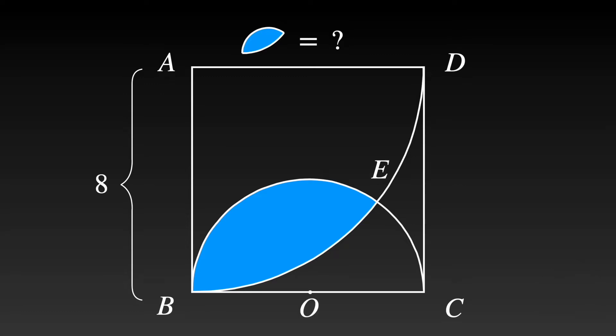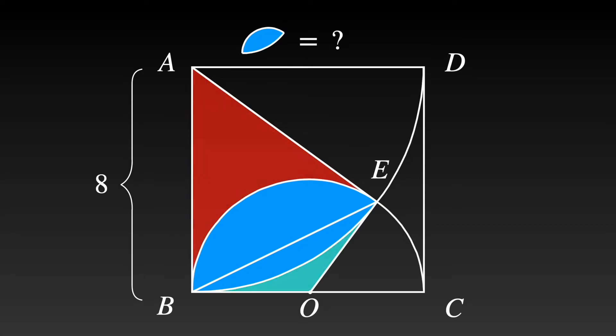Get the center of the semicircle O along line segment BC. Construct line segments AE, OE, and BE. Shade the shapes in red and green as shown.